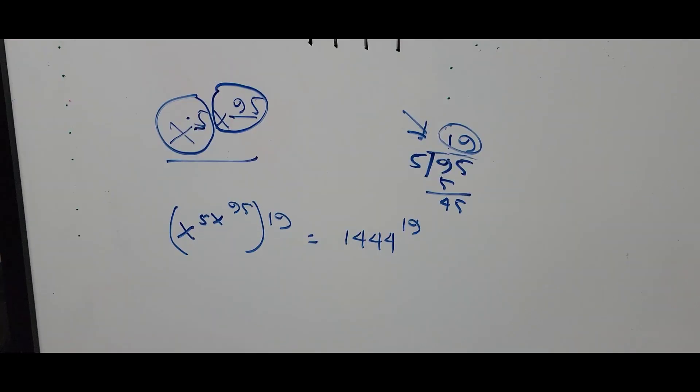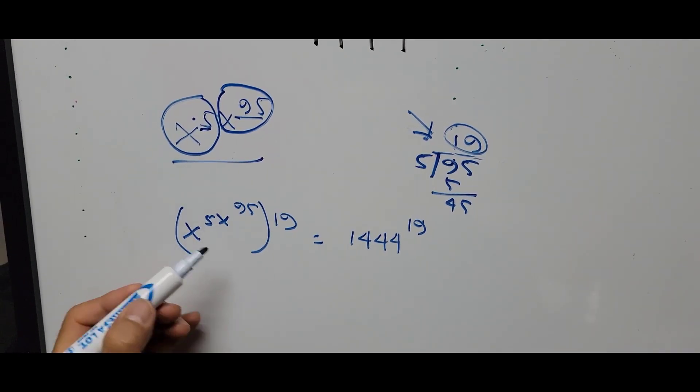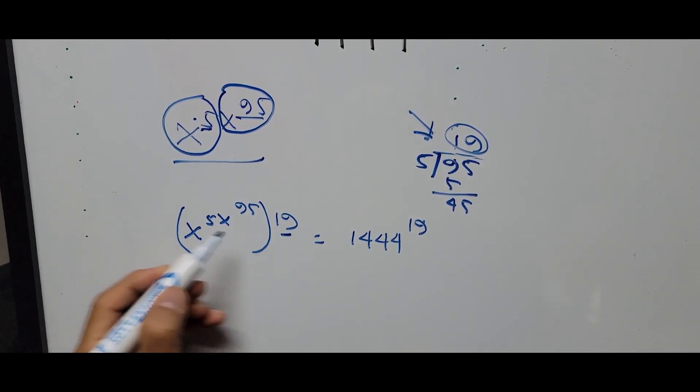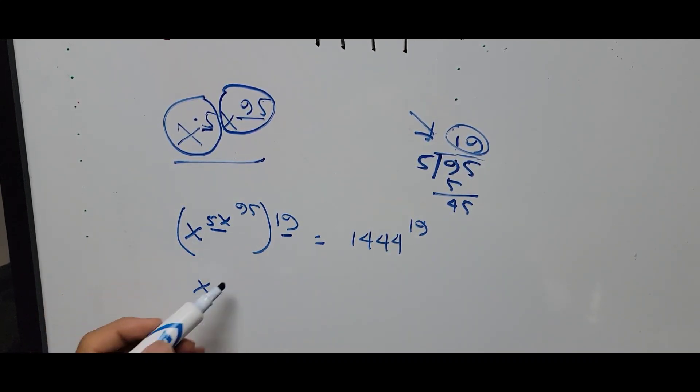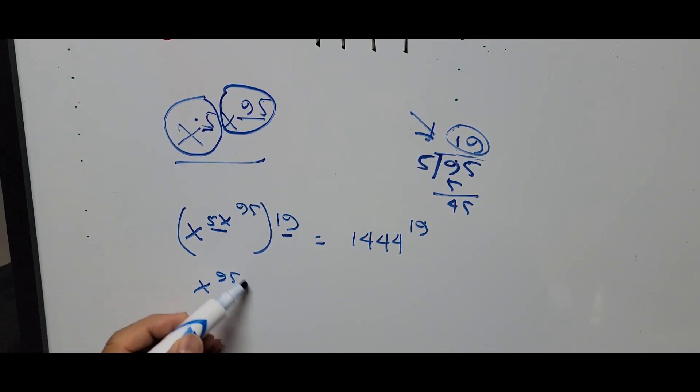The left side of the equation now becomes, multiplying this 19 to 5x, that is now 19 times 5 is 95. So that is x to the 95 raised to the power 95 equals the right side of the equation, 1,444...